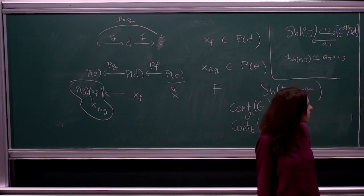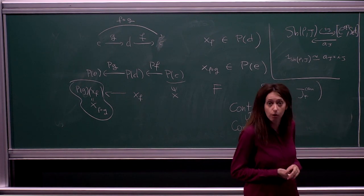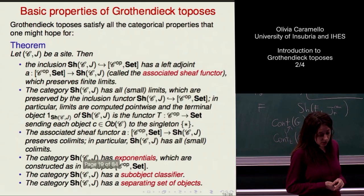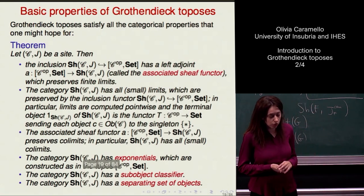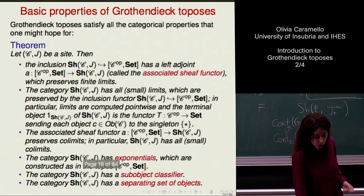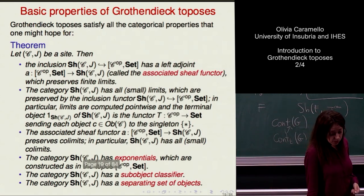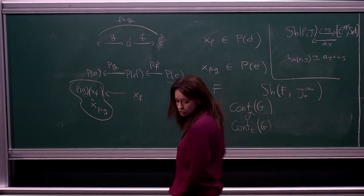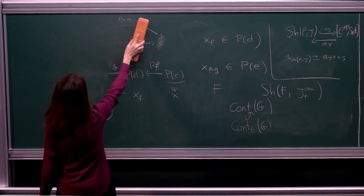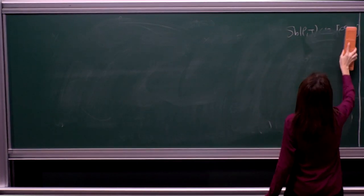Another nice property that these categories of sheaves have is the existence of exponentials for any pair of objects. Exponentials are calculated as in the category of presheaves — to construct an exponential in a category of presheaves, you just use the universal property of exponentials together with the Yoneda lemma. Another important aspect of these categories of sheaves is the existence of a sub-object classifier Ω, which classifies the sub-objects in the category: it is characterized by the property that the arrows from any object A to Ω are in natural bijective correspondence with the sub-objects of A in the category.